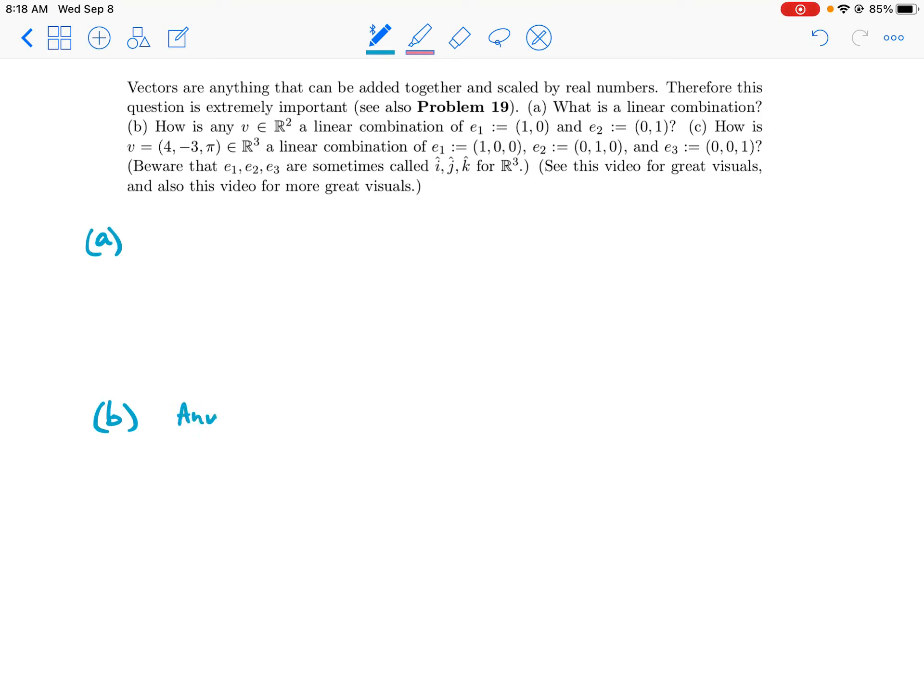Okay, how is any v a linear combination? So any v in R² is really some vector with two components. We usually call them, if the vector is called v, then I like to call them v1 and v2. So v is equal to (v1, v2).